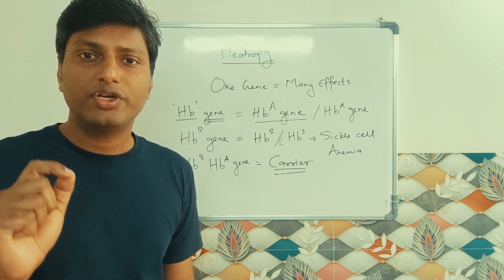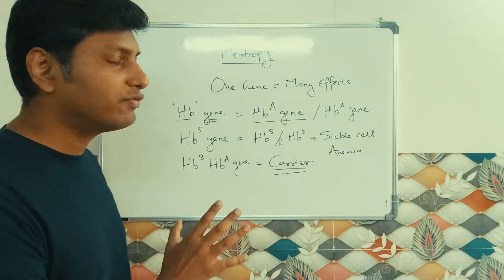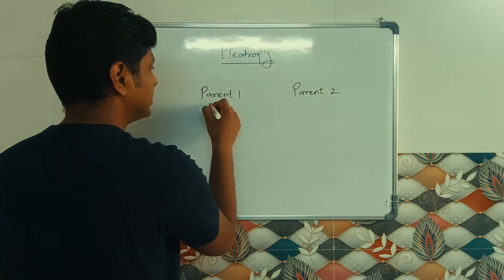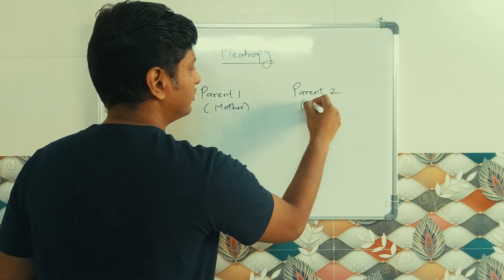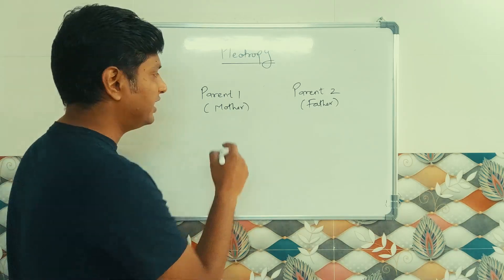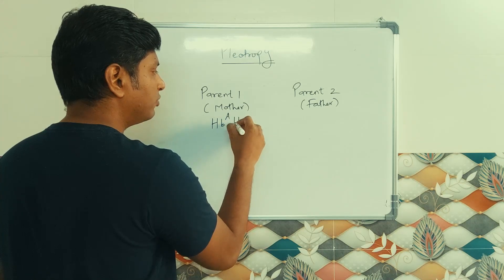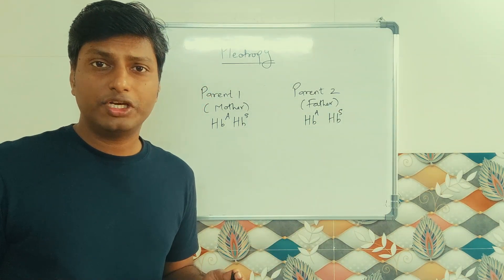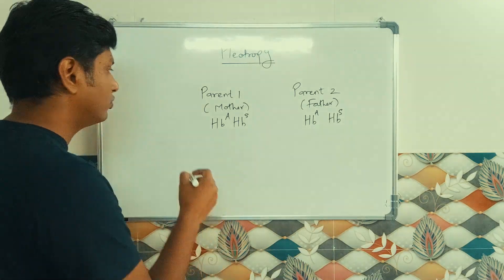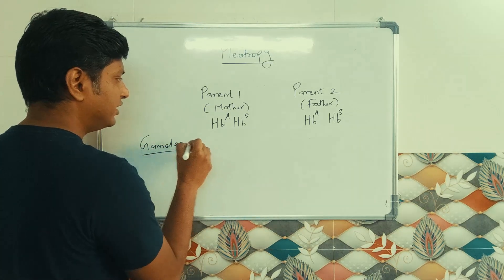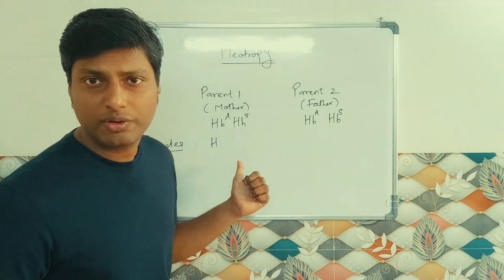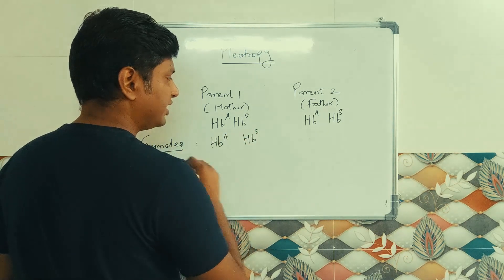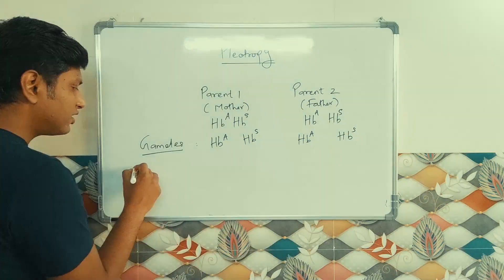Now let us draw a cross to understand the 2:1 ratio. We consider two parents — parent one (mother) and parent two (father) — both of whom are carriers. That means each parent has one normal hemoglobin gene (HbA) and one sickle cell gene (HbS). Each parent will produce two types of gametes: one gamete with HbA and one gamete with HbS.